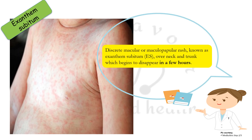In exanthem subitum, there are discrete macular or maculopapular rashes over the neck and trunk which begin to disappear in just a few hours. This is caused by human herpes virus 6 and 7.